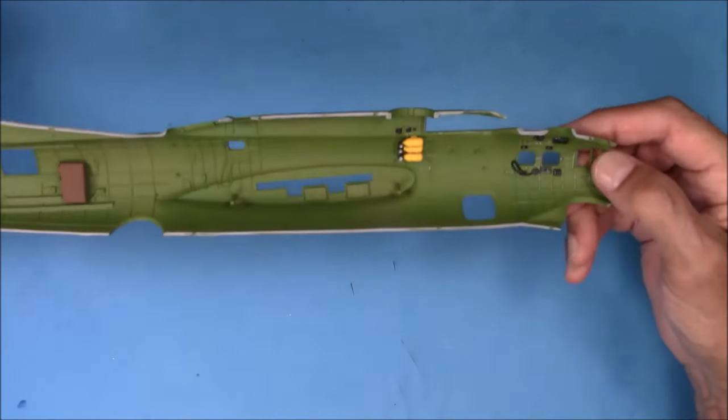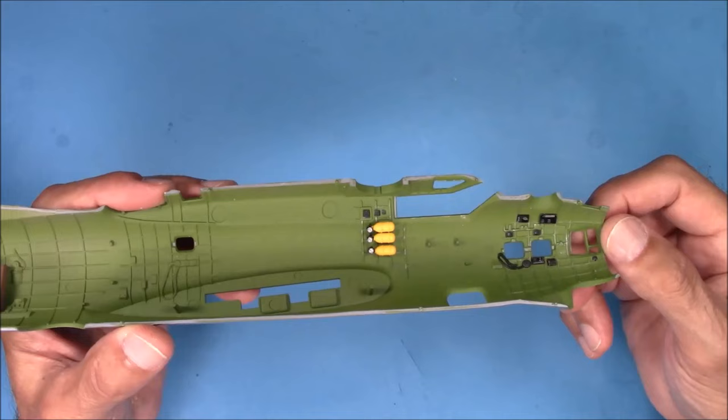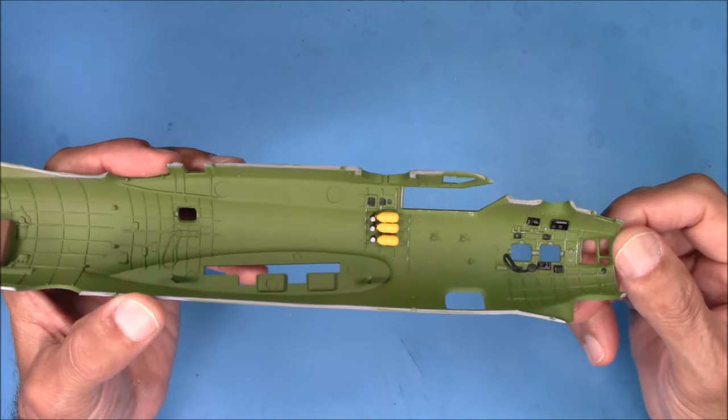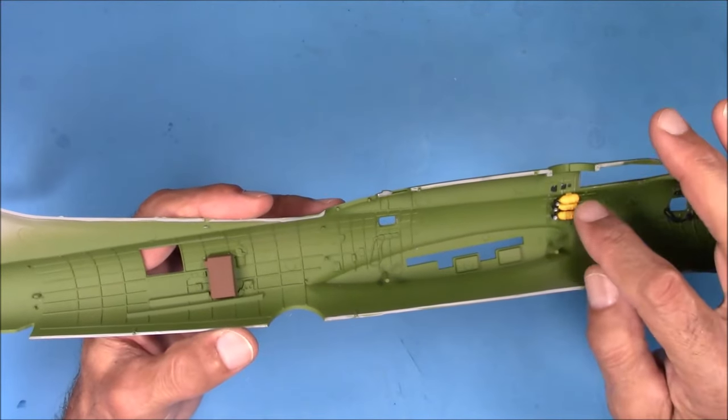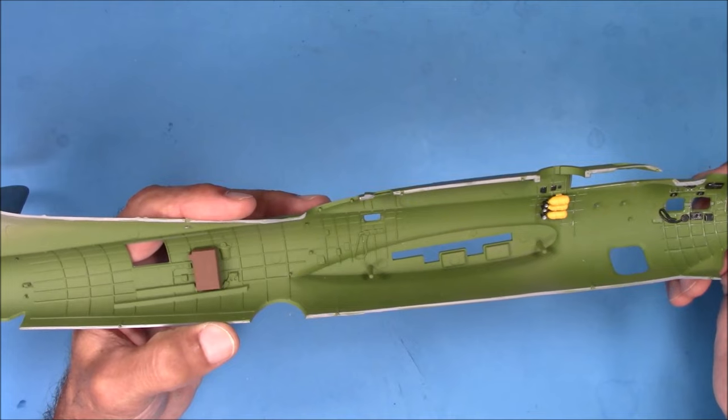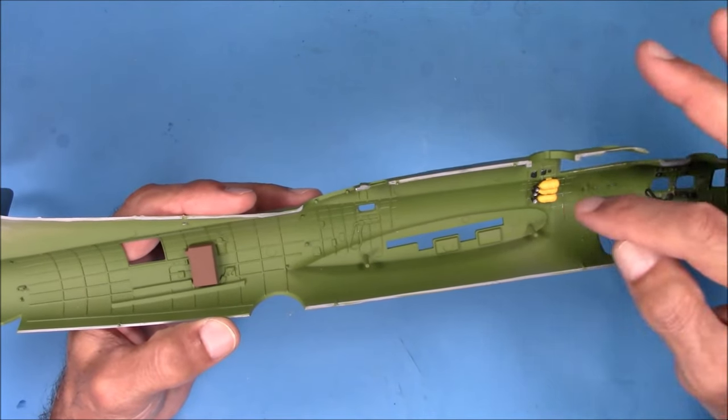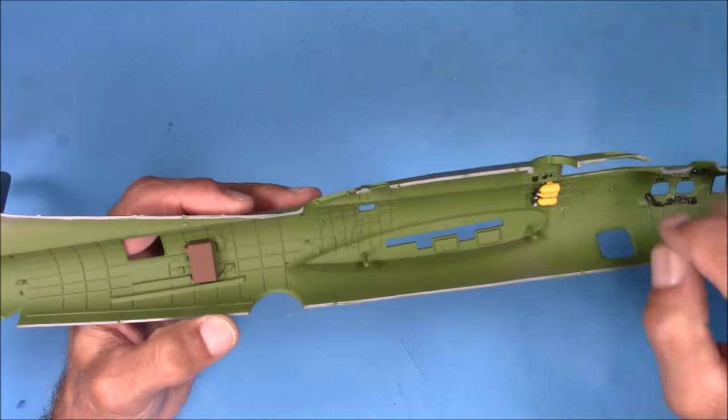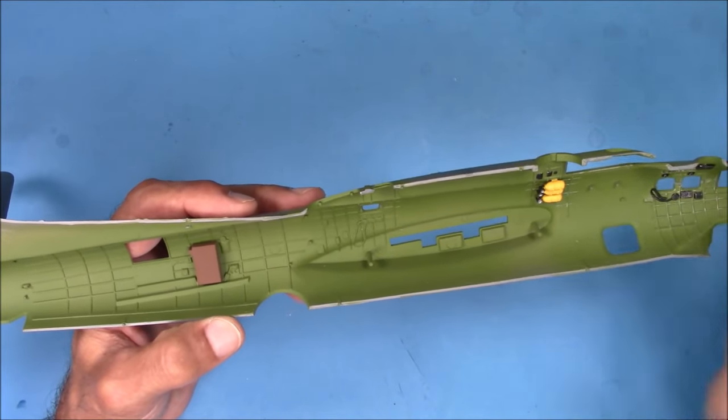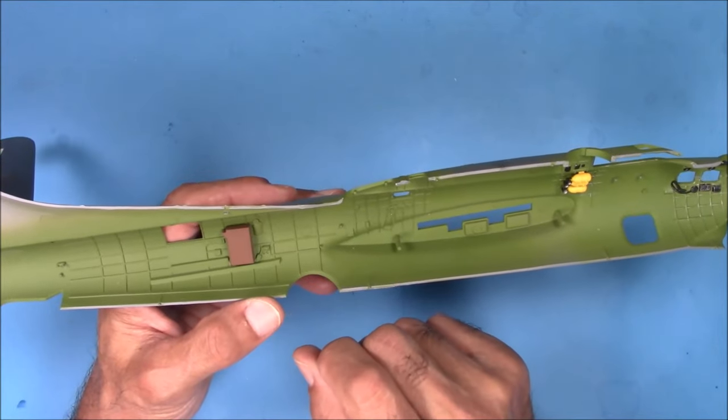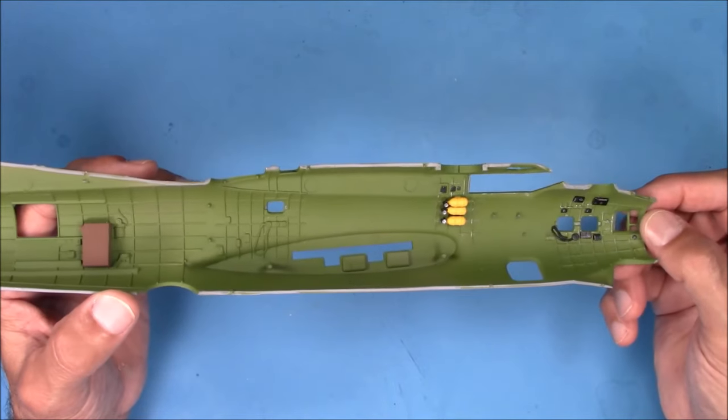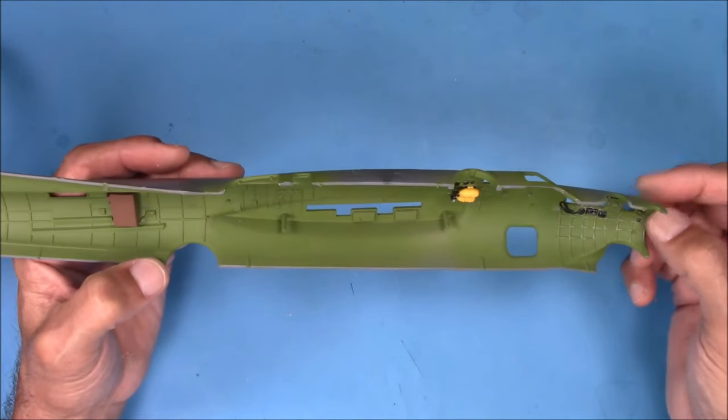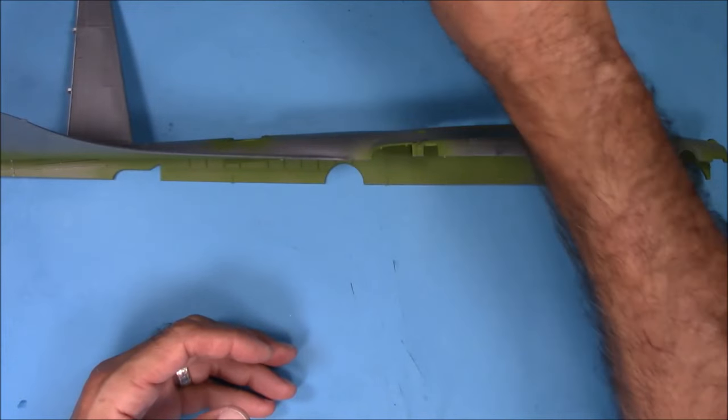Now for the interior on the port side of the fuselage, here's what I did. These are the oxygen bottles that came from the Verlinden set, and they'll look pretty good. Again, you're not going to see very much once everything is closed up. You're just going to get a glimpse of these oxygen bottles, and that's the .50 caliber box. So the interior came out pretty good. And here's the other side.